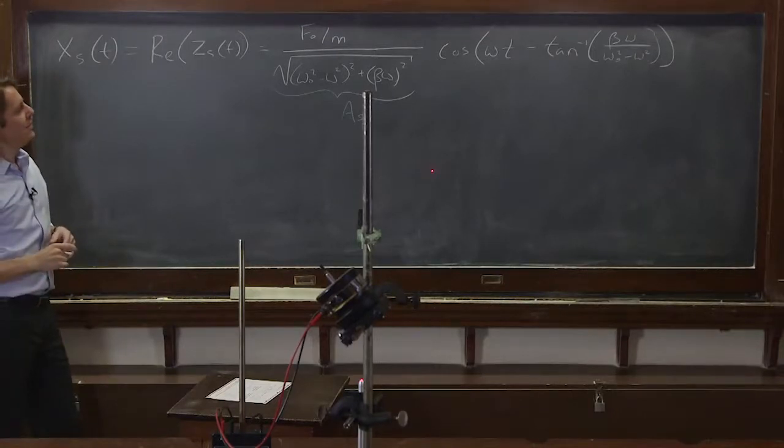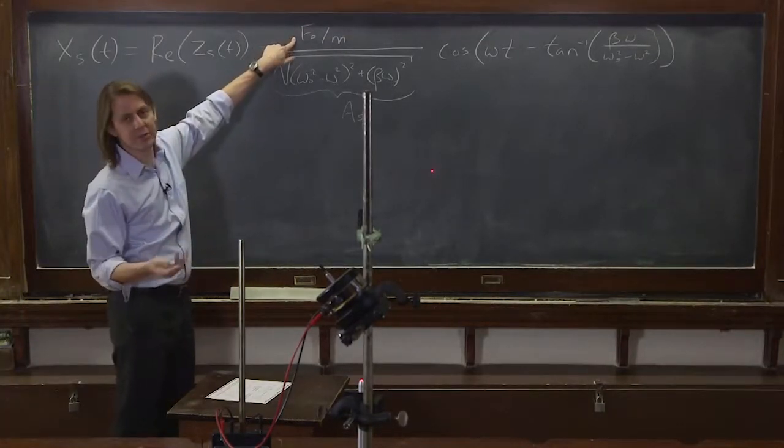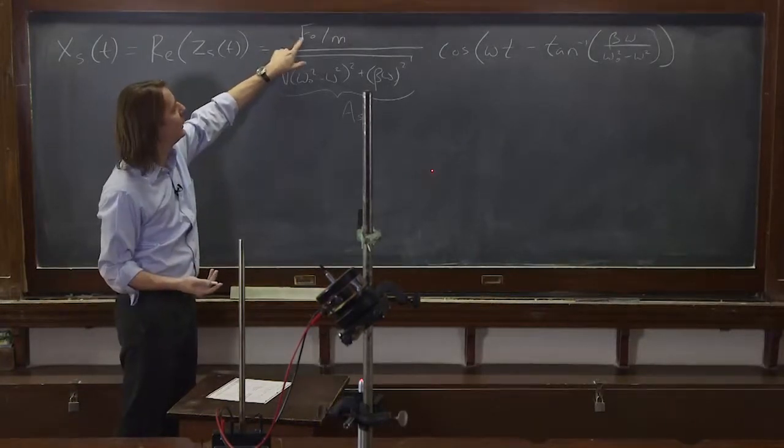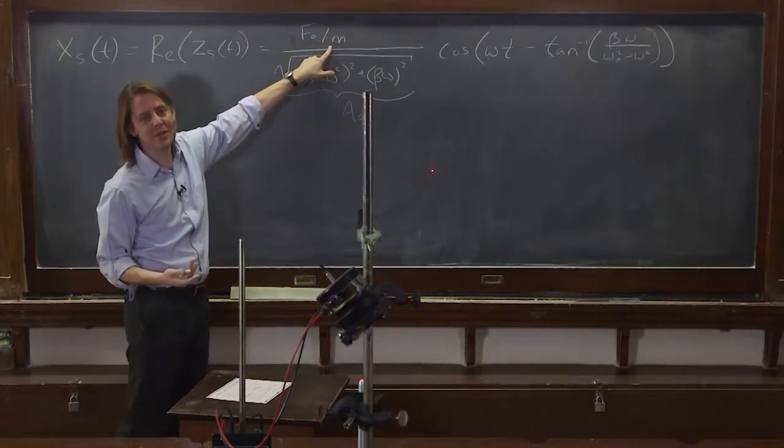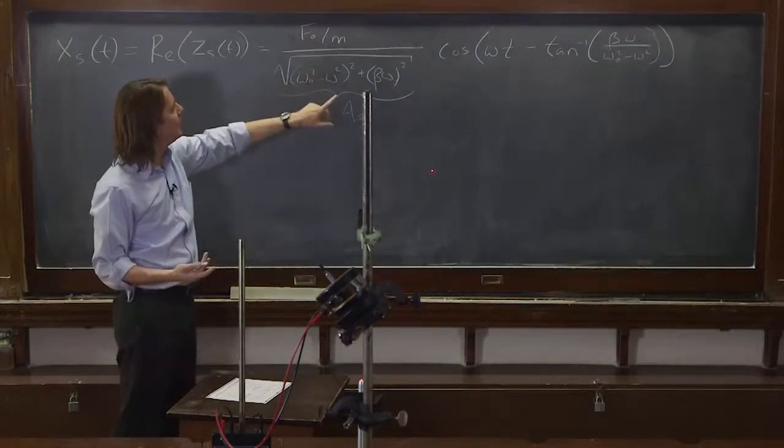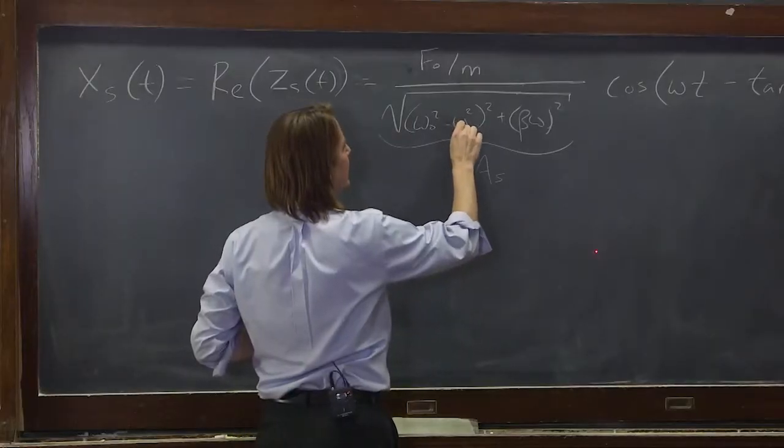So you can kind of see that the amplitude is going to depend on a few things. It's going to depend on how hard it drives it. That's not too surprising. If you push harder, it's going to get a bigger amplitude. If it's light, it's going to get a bigger amplitude. That's not too surprising. If it's heavy, it's going to have a small amplitude. But then, really, this is the interesting part. How does it vary as you change the drive frequency?